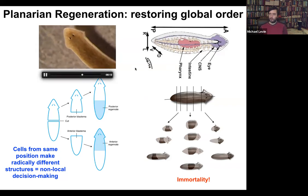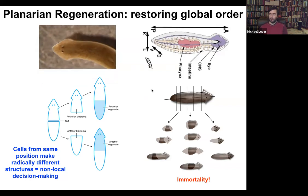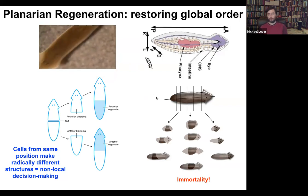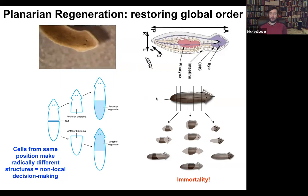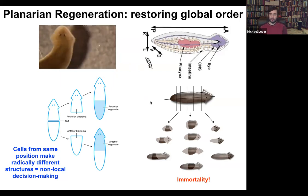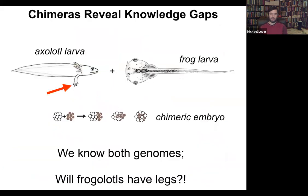Despite all the amazing progress in molecular genetics, we're really not very far along in understanding how cellular collectives make decisions. One of the easiest ways to see that is to think about chimeric organisms. Here's a simple example we're making in my lab: here's an axolotl larva — axolotl larvae have legs. Here's a frog tadpole — tadpoles do not have legs. One can ask: if I combine early axolotl tissue with early frog tissue in early embryogenesis, making a chimeric embryo — they're perfectly healthy, we call them frogolotls.